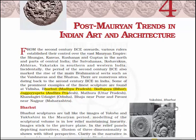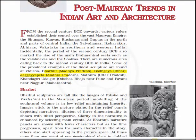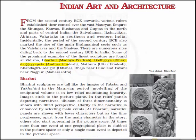Incidentally, the period of 2nd century BCE also marked the rise of the main Brahmanical sects such as Vaishnavas and Shaivas. There are numerous sites dating back to the 2nd century BCE in India. Some prominent examples of finest culture are found at Vidisha, Bharud in Madhya Pradesh, Bodhagaya in Bihar, Jagayapeta in Andhra Pradesh, Mathura in Uttar Pradesh, Kandagiri-Udaigiri in Odisha, and Bhaja near Pune and Pavani near Nagpur.